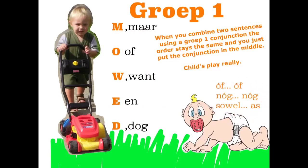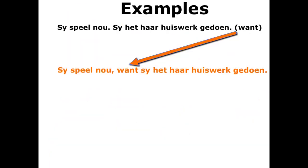Let's look at an example so we can better understand Groep 1. All we want to do here is look at the two sentences. The way you might be asked the question is you would be given the two sentences and then the word to join them with in brackets. So: first sentence completely unchanged, then the comma, followed by the conjunction which breaks the two sentences so we know where they split, and then the second sentence completely unchanged.